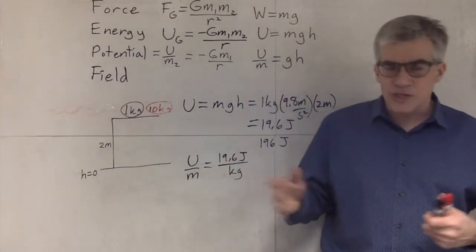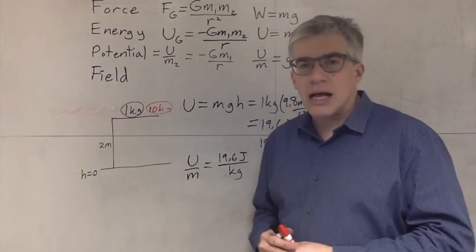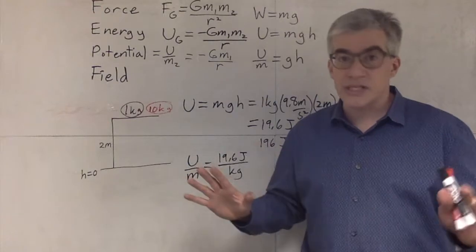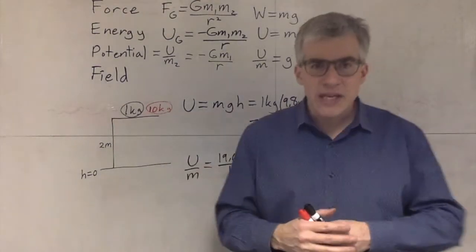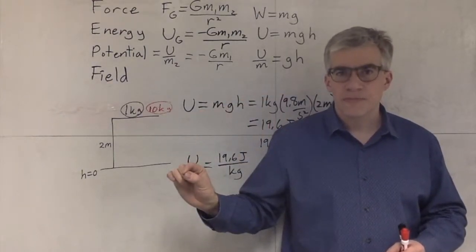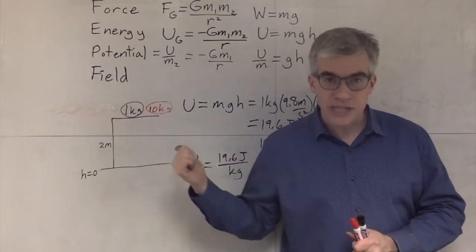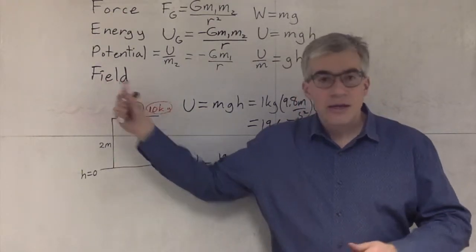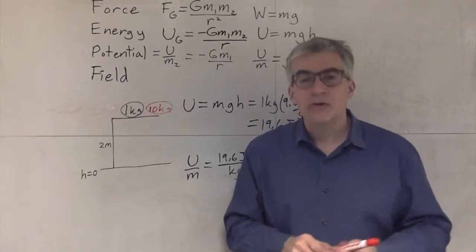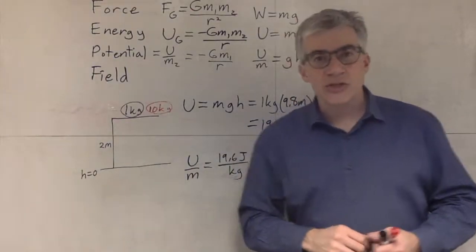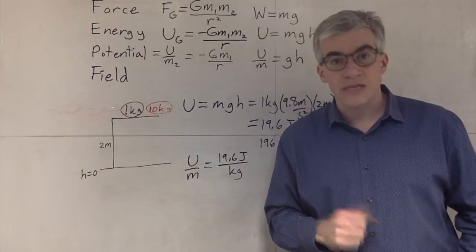We didn't get into gravitational potential much in first-semester physics because we didn't really need it. But it turns out it's indispensable in electricity — it corresponds to the concept of voltage. One way of thinking about potential is that it is a number at every point in space, and that's what we call a scalar field. The gravitational potential as a scalar field is a function of location: you put in a location, you get out some number of joules per kilogram.